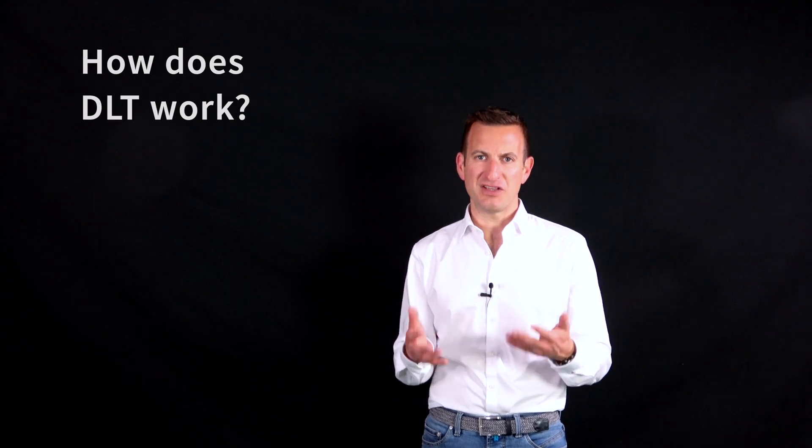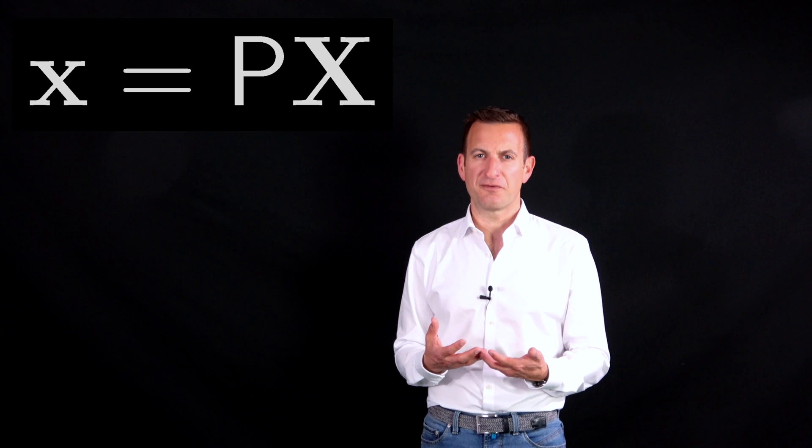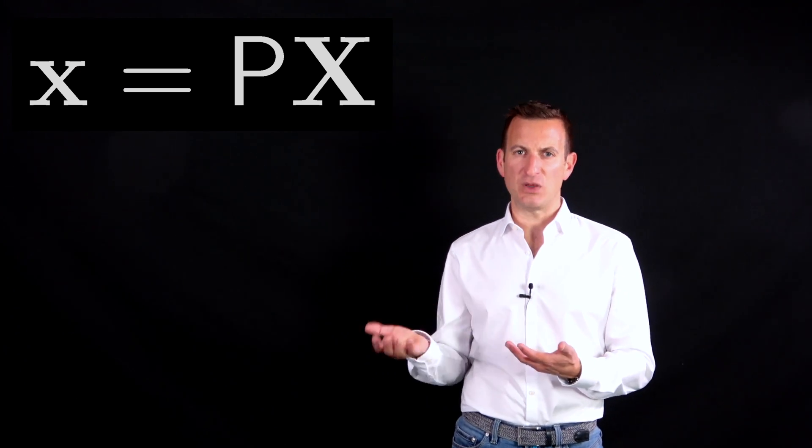So how does DLT work? How is this happening? Everything starts with a fairly simple equation: x equals PX.